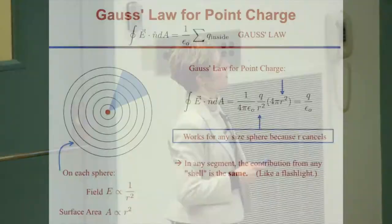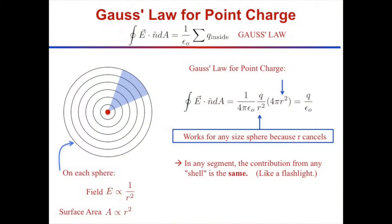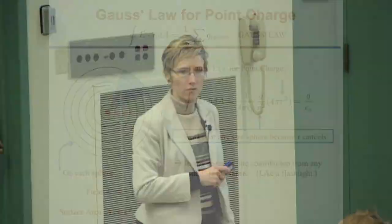We then thought of expanding this to a general case - surrounding the charge with any shape by following different spheres in different places. Think of breaking up the sphere into segments like orange wedges. In any segment, the contribution to the flux through that shell is the same. Like a flashlight shining on a piece of paper: if the paper is close, you get a small bright circle; if it's far, you get a large dim circle - catching the same number of photons. Same flux through any of those shells.